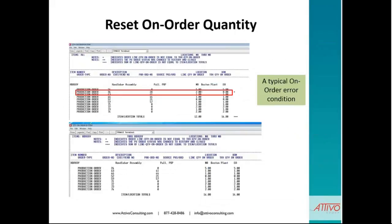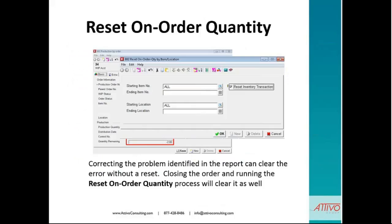Let's take a look at a reset on-order quantity report that shows an error. We have an error on production order number 34. We can actually go in and find that error and correct it. On a typical order, the error condition exists and we can see where it is: quantity on order shows as 12, line quantity on order shows 12, transaction quantity on order shows 14. We can readily identify the item that caused the problem and fix it on the order — or we can reset the on-order quantity process, which will do that for us.